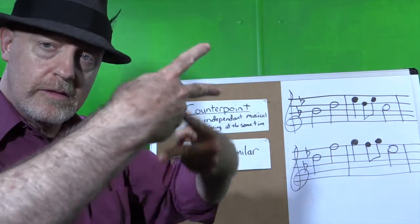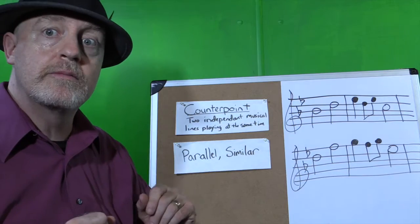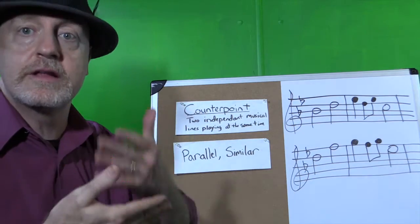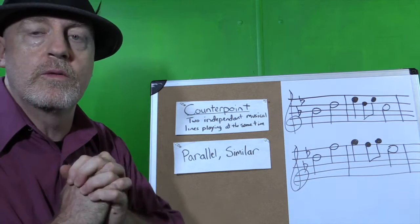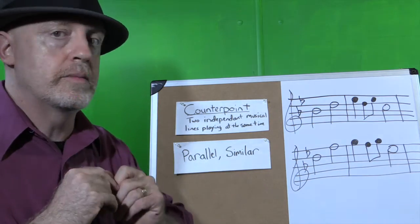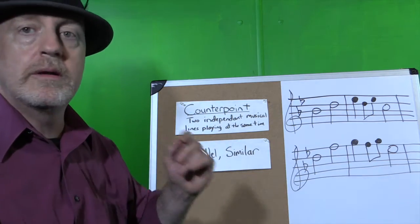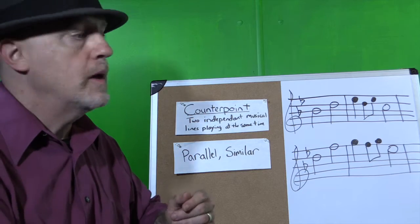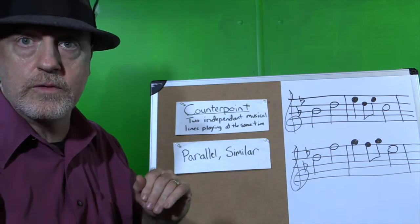Now sometimes these lines can line up to create chords and triads, but sometimes they can create dissonances where our ears want to resolve them, that we want them to come back to something that sounds a little better. But counterpoint is very important in band and choir music because those lines can move in different ways.